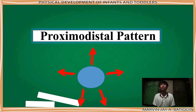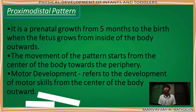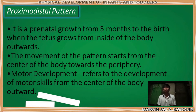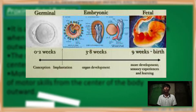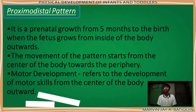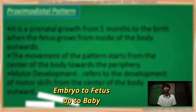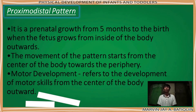The proximodistal pattern is a prenatal growth from five months to birth, when the fetus grows from the inside of the body outward. This is prenatal, as opposed to the first pattern which is postnatal. The growth automatically starts in just a week. It is a little bit similar to the cephalocaudal pattern — both start processing when the baby is still inside the womb. However, prenatal development starts with fertilization in the germinal period, to the embryonic period, and continues into the fetal period until birth. Even in a single zygote, the combination of sperm cell and egg cell turns into embryo, to fetus, to baby. In simple words, the growth begins before birth.